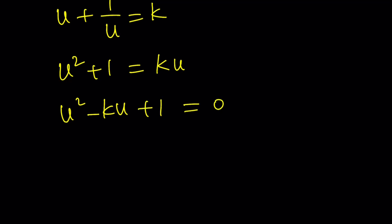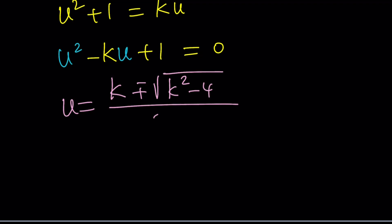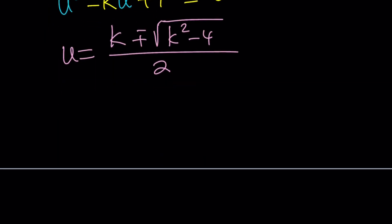Using the quadratic formula: u equals negative b — b is negative k — plus or minus the square root of b squared minus 4, all divided by 2. This gives us two solutions. Since u is e to the power iz, all we need to do is set this equal to e to the iz and then solve for z from there.